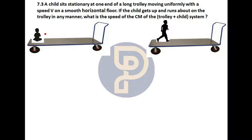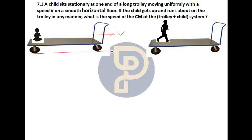In this question, we are given that a trolley is moving uniformly with a speed v. This trolley is moving at speed v, and a child is sitting on it. The trolley is running on the road and there is no friction — friction force is zero. There is absolutely no roughness on the surface.